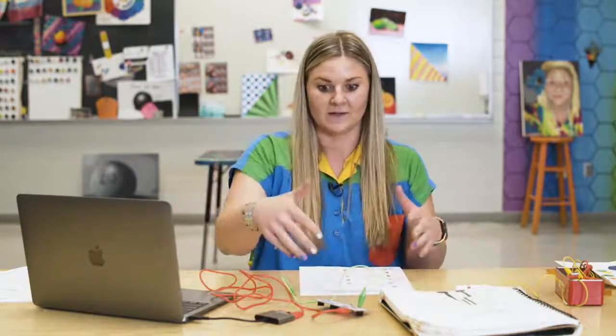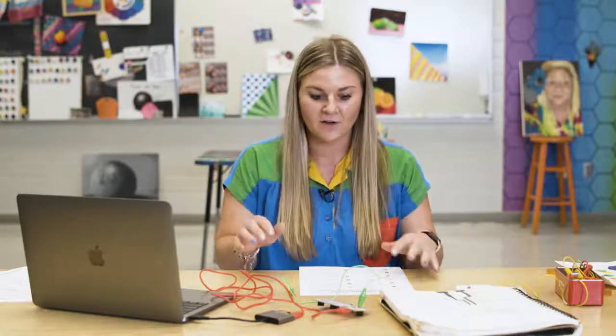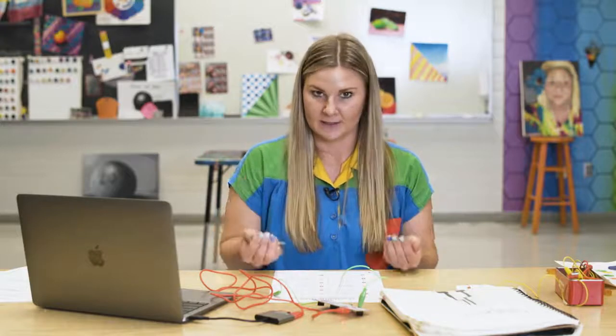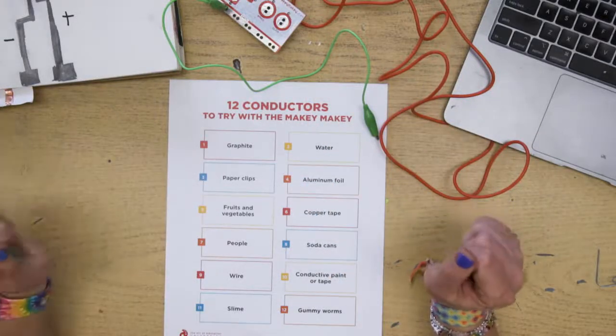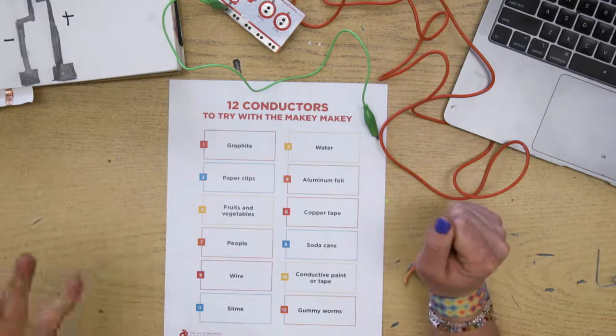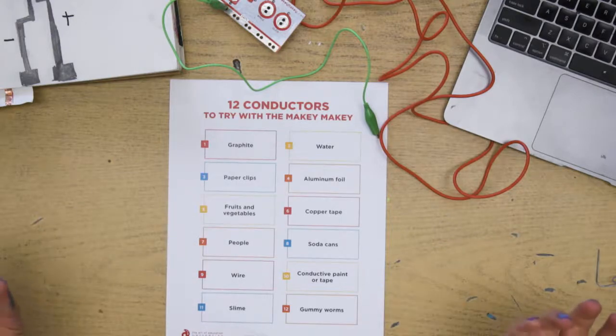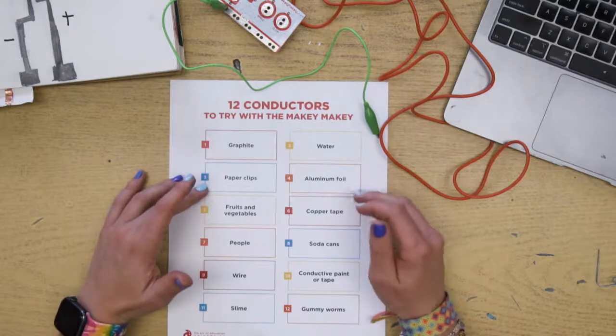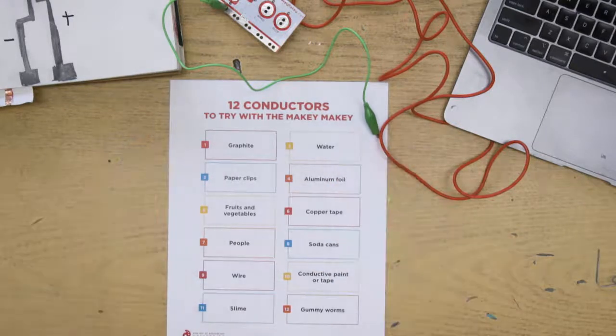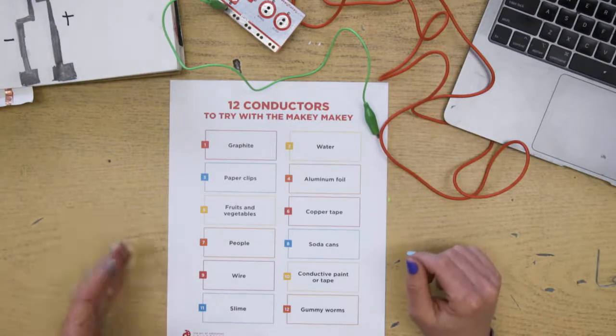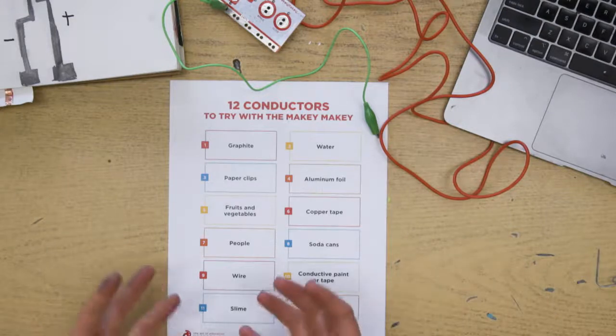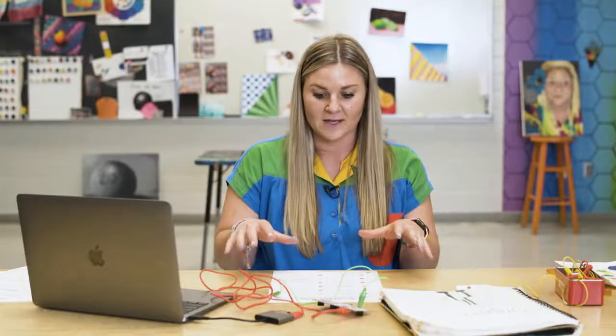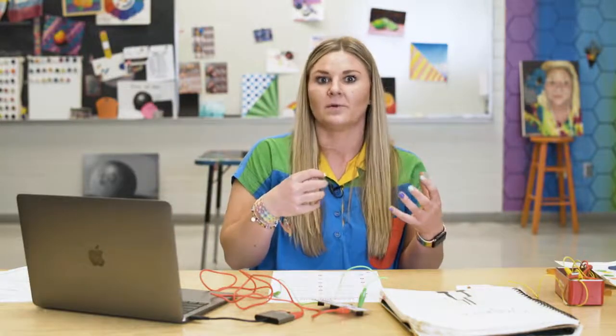When it comes to this, there's electricity, we learn about circuits, there's coding that's involved. But one of the things that we have to have in order to make this work are conductors. In the resources, there is a handout that is called 12 conductors to try with the Makey Makey. Graphite is a really good one to use because we're using it with pencil all the time. Anything that's metal, like paperclips, aluminum foil, copper tape. Water is actually a conductor. Fruits and vegetables, people are conductors, things like soda cans, wires, gummy worms, slimes. This is just 12 things on here. These are things that you can have your students explore. It's a great way to pull in some of those science concepts as well.